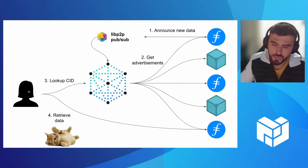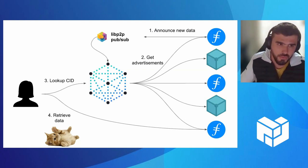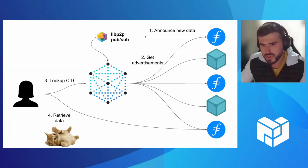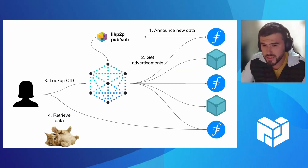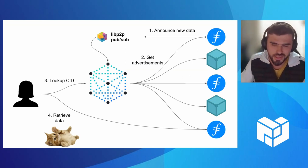After the content is indexed, a user can use IPNI to look up data. The user sends a request with a content identifier to IPNI, and IPNI returns a list of providers where the data can be fetched from. The user then reaches out to these providers separately to download the data — the cat picture.